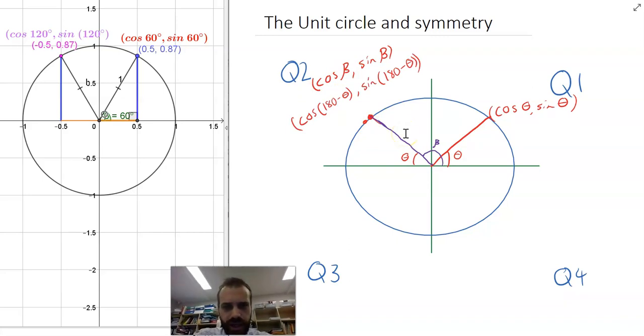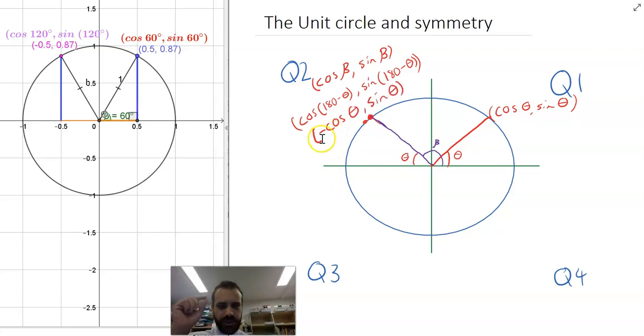We can say that it's going to be cos beta sine beta in there. We can also say that that's cos 180 minus theta. You can see that theta is a supplementary angle to beta, and that allows us to compare it to that Q1 and sine 180 minus theta, because beta is equal to 180 minus theta.